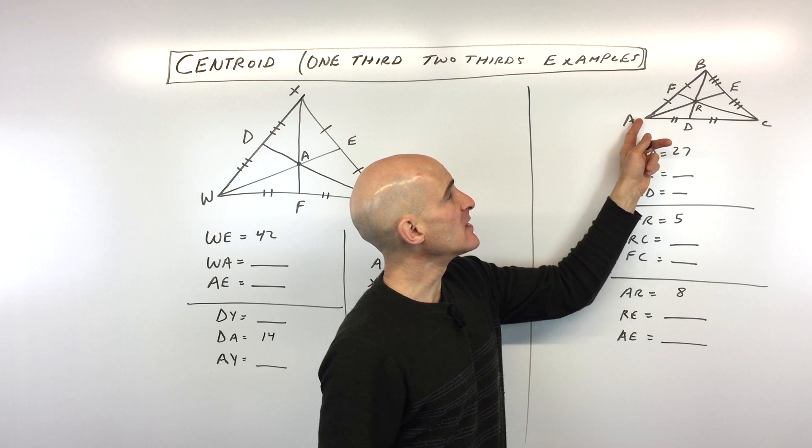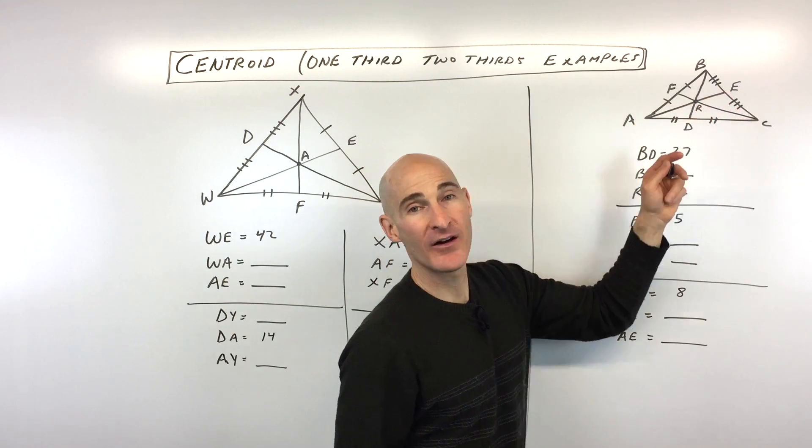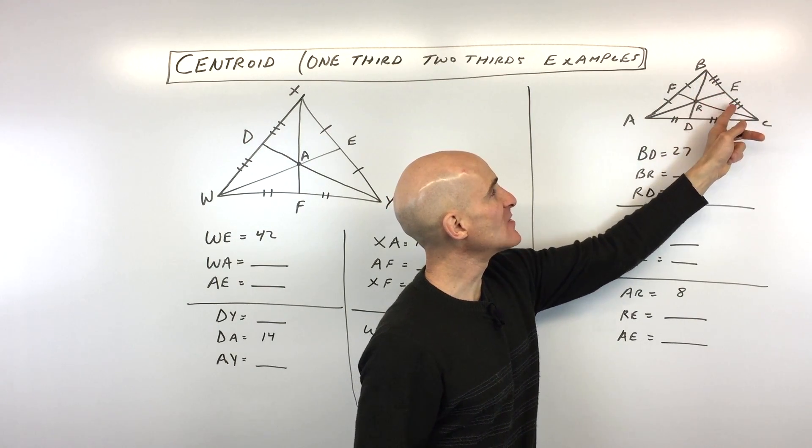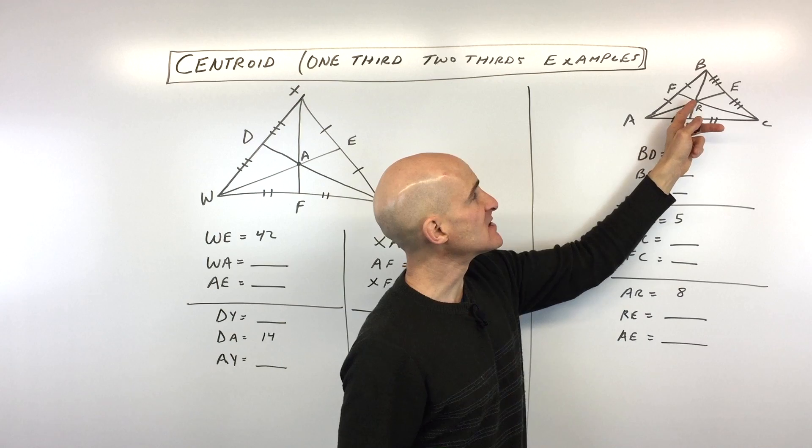So what's a median? Well, a median goes from the vertex to the middle of the opposite side. So you can see here AE. See how I've marked these two segments as being the same? They're congruent because it's the midpoint.